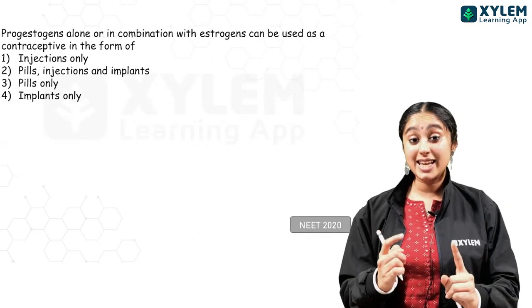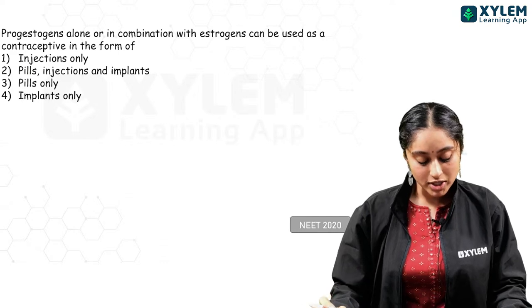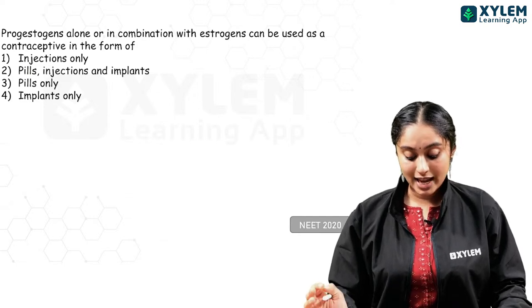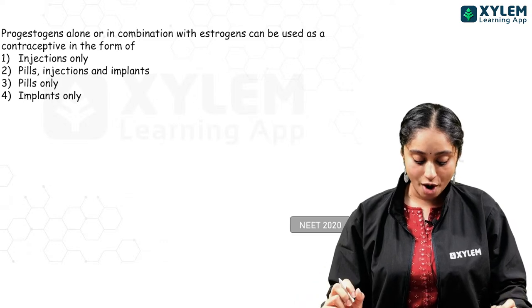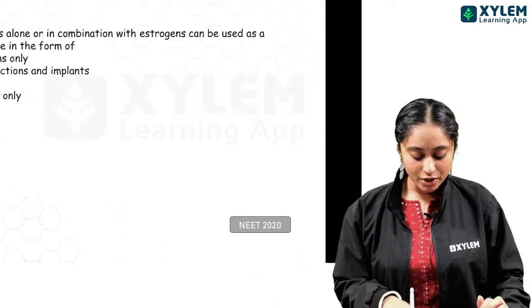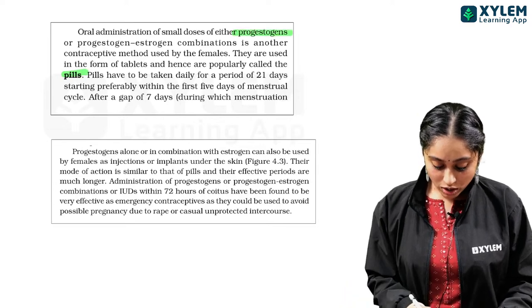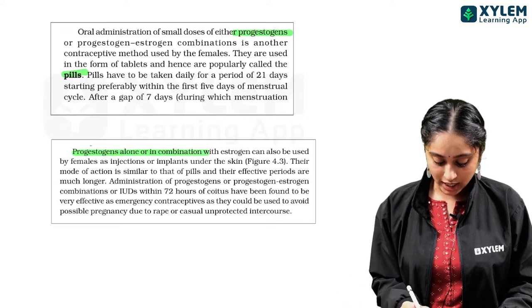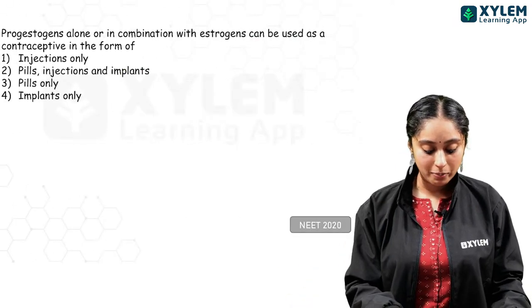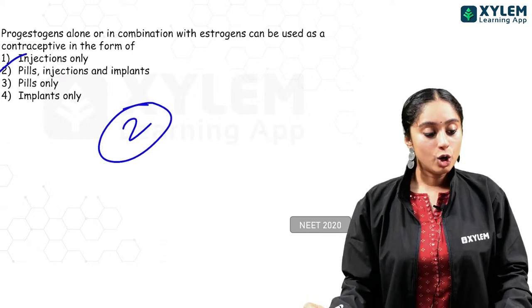NEET 2020: progesterone alone or in combination with estrogens can be used as a contraceptive in the form of? NCERT clearly states: pills use progesterone, and progesterone alone or in combination can also be used in injections or implants under the skin. So option 2 — pills, injections, and implants — is absolutely correct.